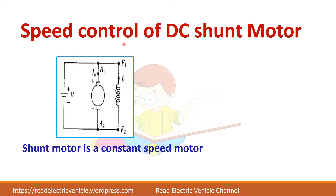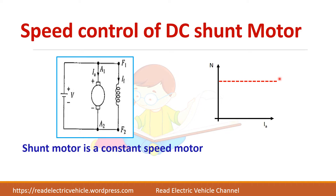First let us take shunt motor. In a shunt motor, the field winding will be in parallel to the armature. Shunt motor is a constant speed motor and we have this characteristics between speed and armature current. If you don't know how you are getting this, just refer to the characteristics of the DC motor previous video.